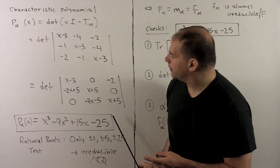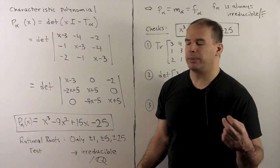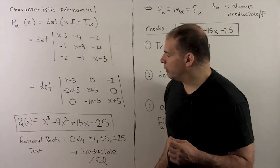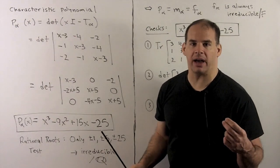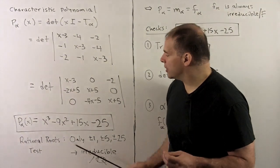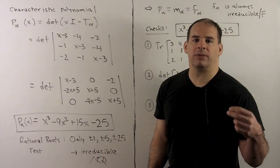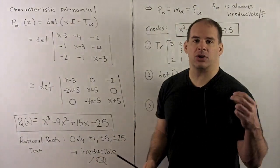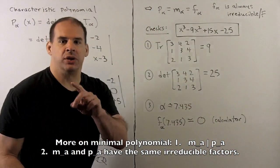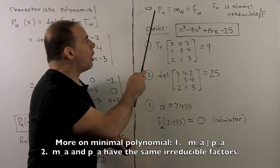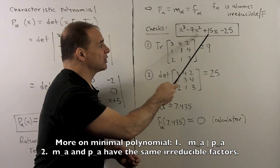Let's show this is irreducible. Because it's cubic, if it were reducible we'd be able to split off a linear factor of the form x minus a rational, so it would have to have a rational root. Applying the rational roots test, the only possible rational roots are plus or minus 1, plus or minus 5, plus or minus 25. Checking these, none of them work, so this is irreducible over the rationals. The minimal polynomial always divides the characteristic polynomial for a matrix, and because this is irreducible, the minimal and characteristic polynomials of T sub alpha are equal. Since f sub alpha is always irreducible over the base field, all three polynomials are equal. So the minimal polynomial of alpha over the rationals is x cubed minus 9x squared plus 15x minus 25.